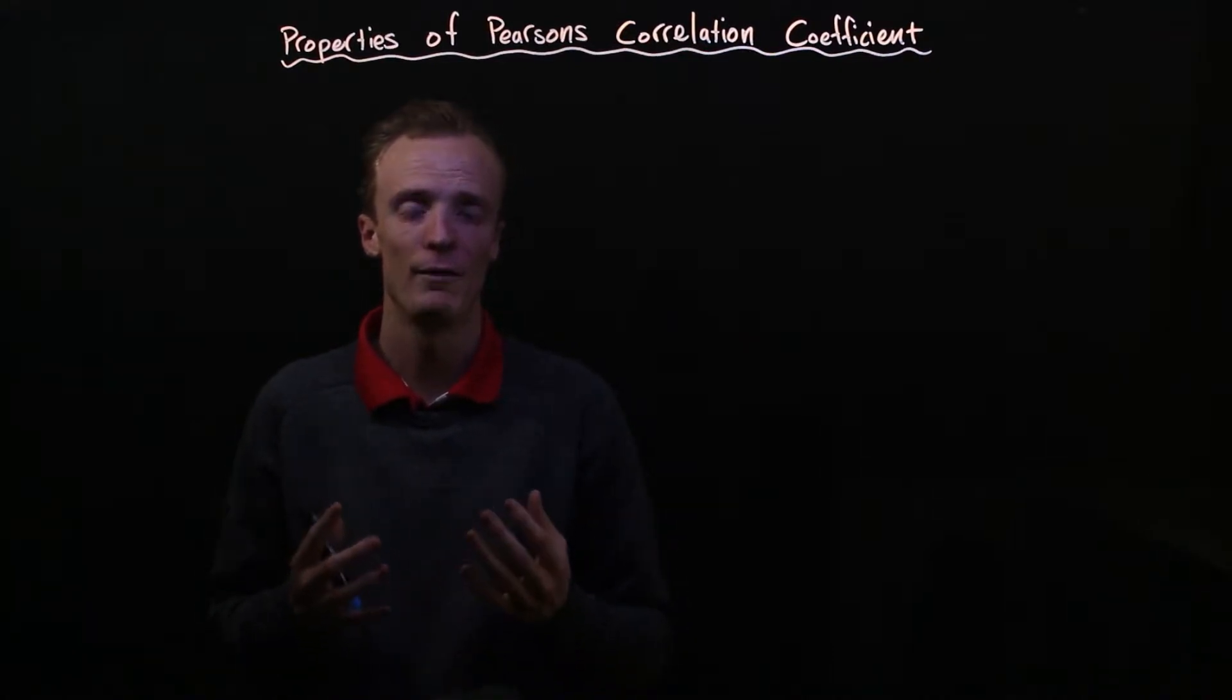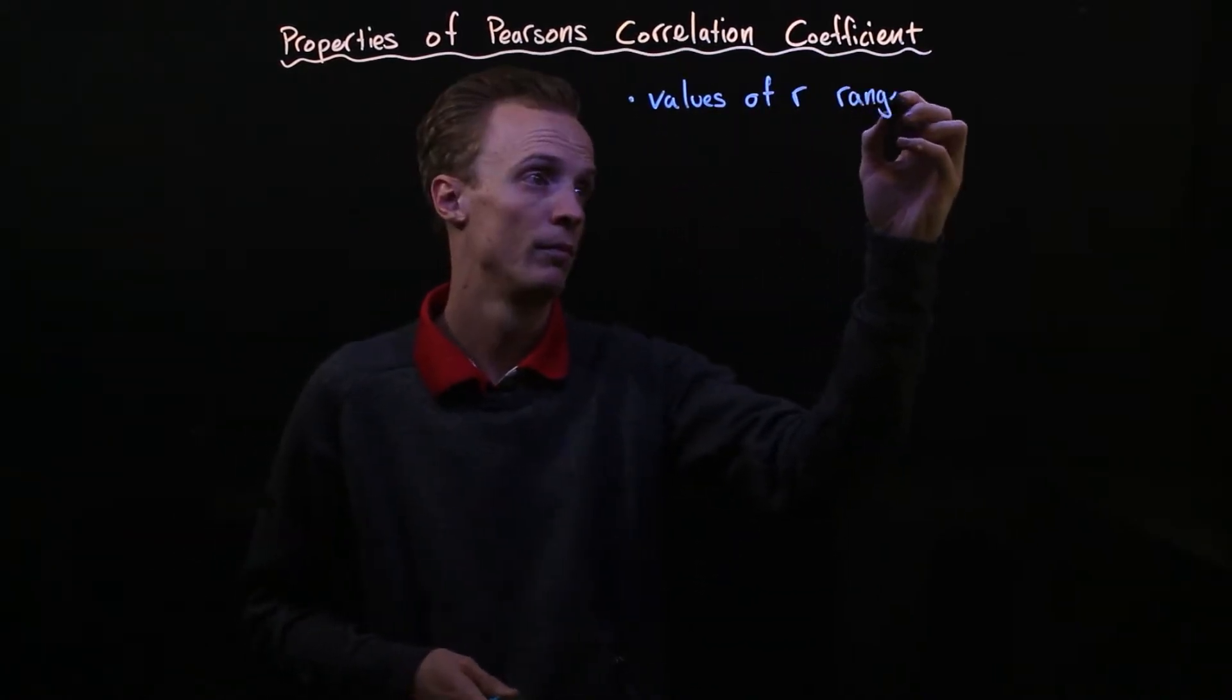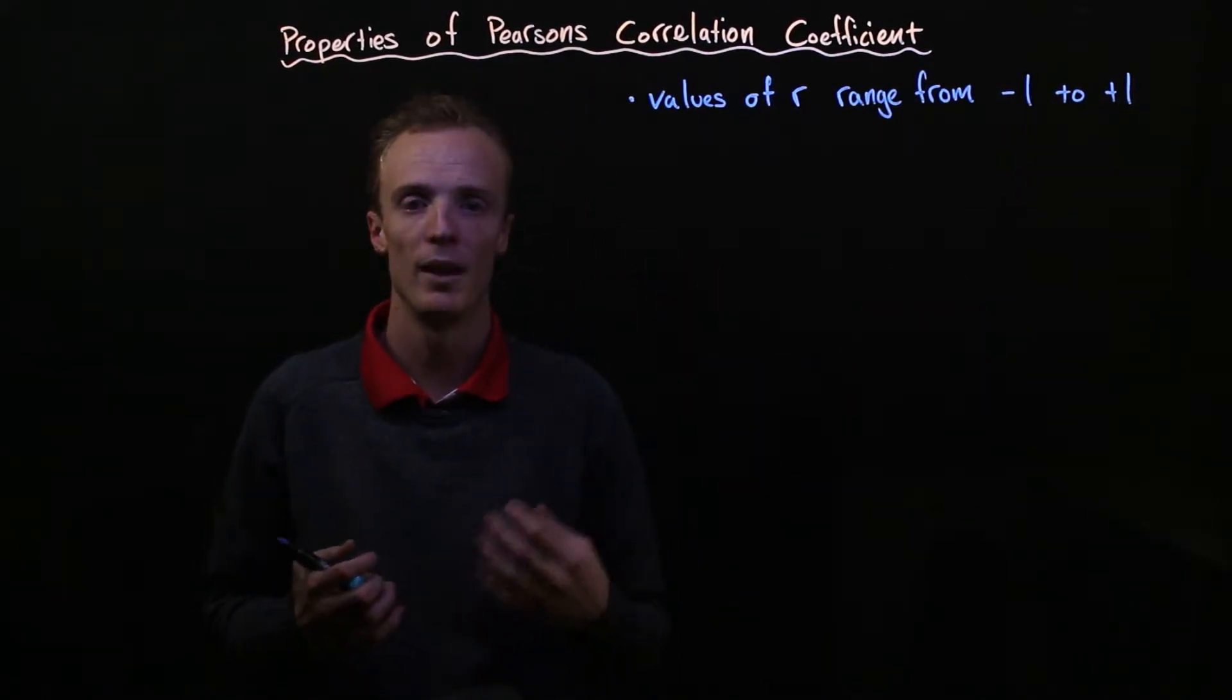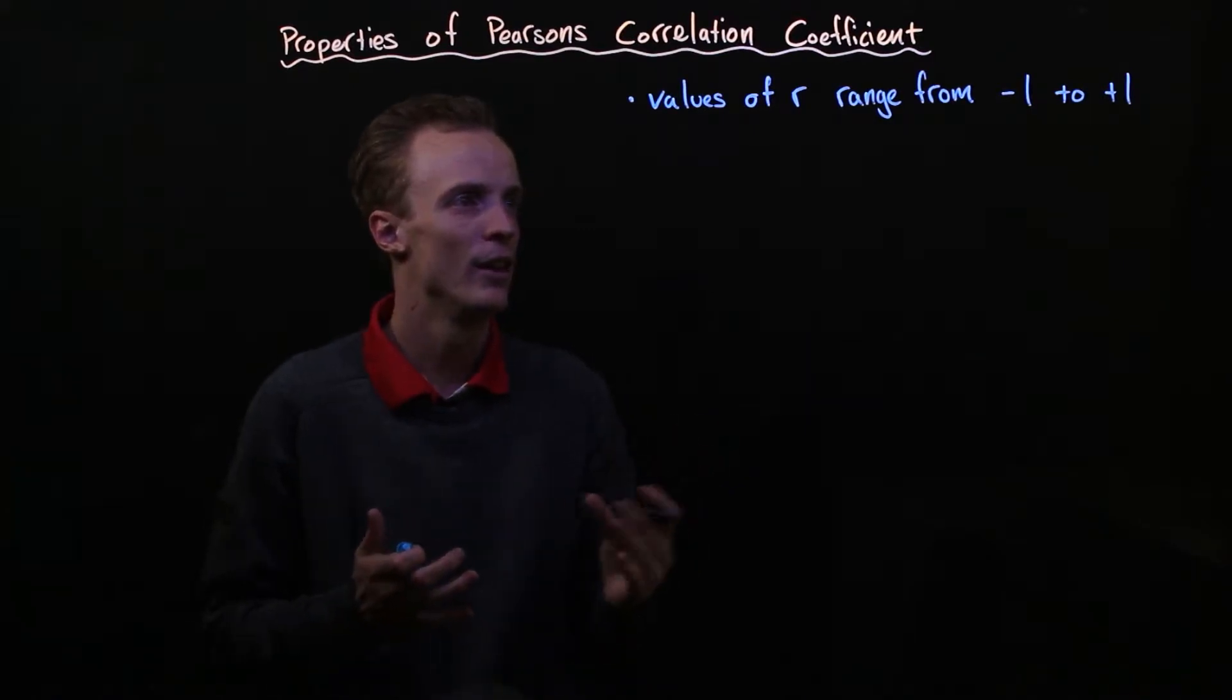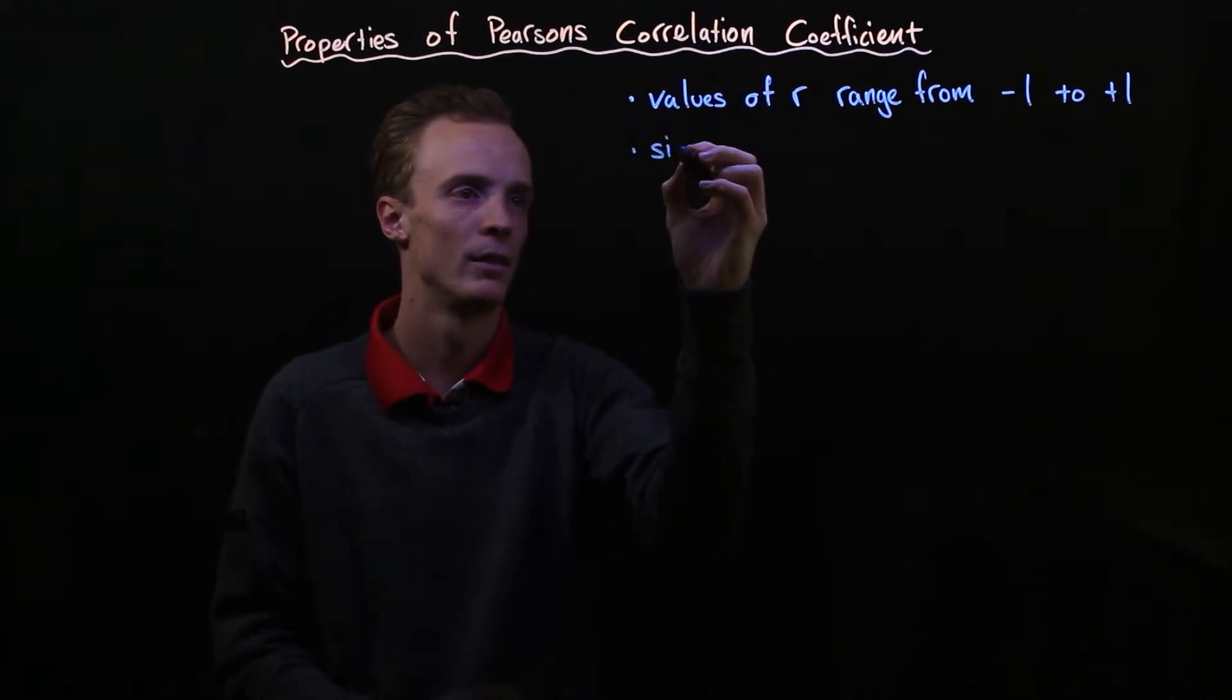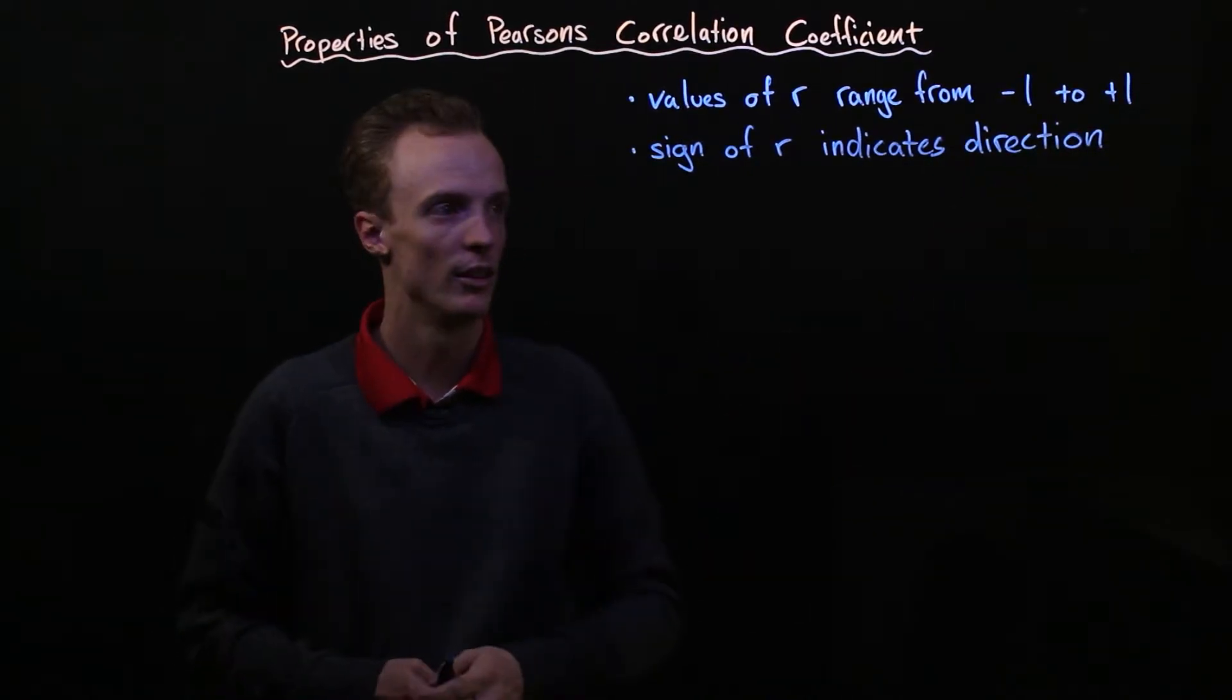Now there are three properties of the R value or Pearson's correlation coefficient that are noteworthy. The first thing that we should note is that the values of R range from negative one through to positive one. They don't fall outside of this range. Now because of this, the sign of our Pearson's correlation coefficient is very important and it can tell us the direction of the correlation that we're looking at.